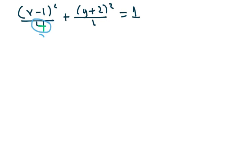Let me write it out again. We have x minus 1 squared over 4, plus y plus 2 squared over 1, equals 1. Since this is in standard form, and this number is bigger, this is your a squared, and this is your b squared.